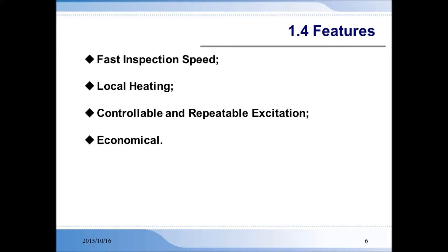Compared to other NDT technologies, vibrothermography has many advantages. It is very fast to detect defects, usually no more than a few seconds. The heat is generated selectively at the location of defects, it is easy to control and repeat experiments by changing certain parameters of excitation, and the cost is most economical.